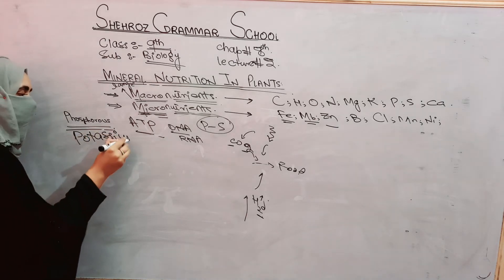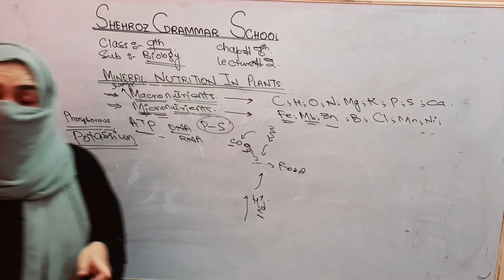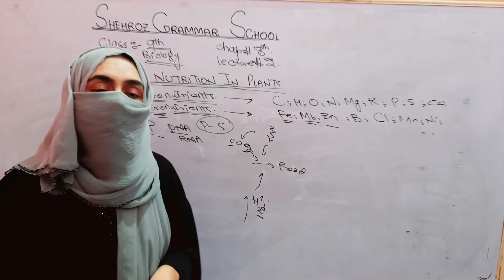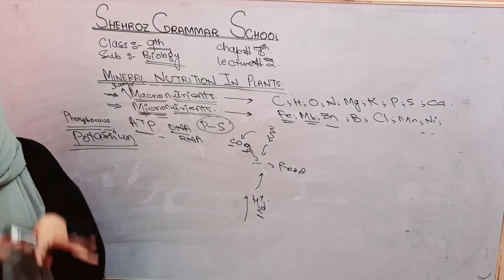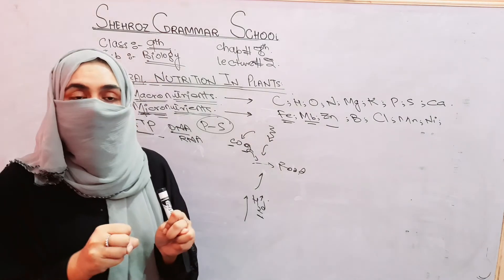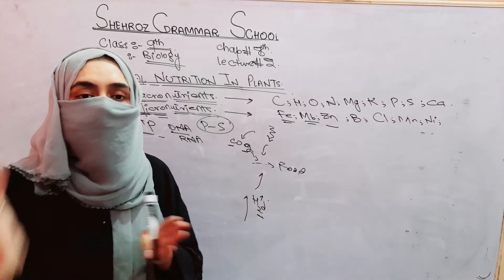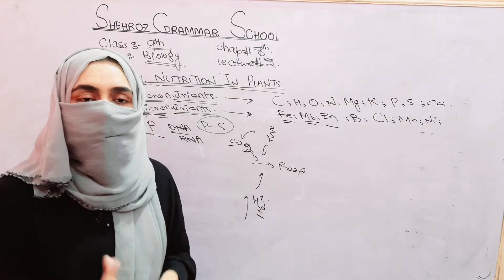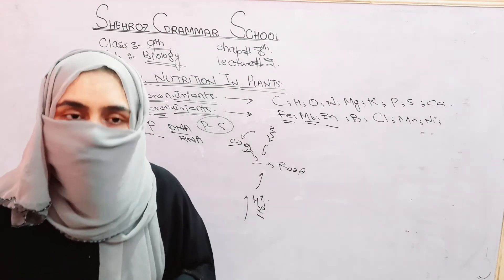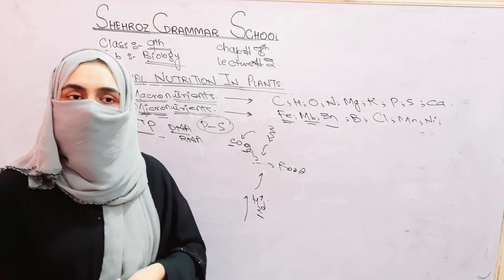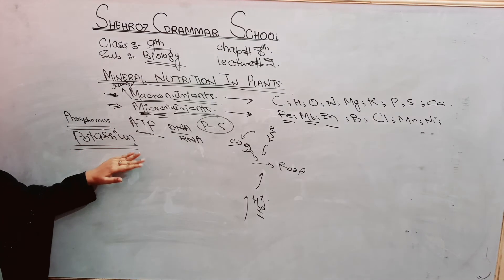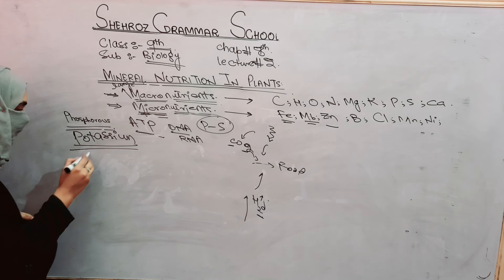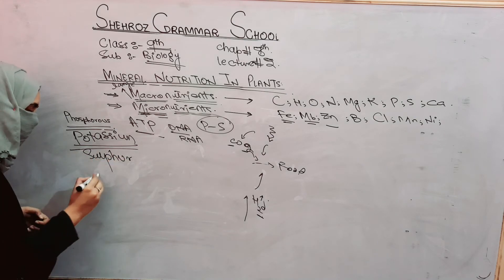Potassium is important for opening and closing of stomata. Potassium is a macronutrient because plants need it in more quantity. With potassium, stomata open and close properly, then plants can have proper gaseous exchange and water loss is reduced through opening and closing of stomata. So potassium is needed.